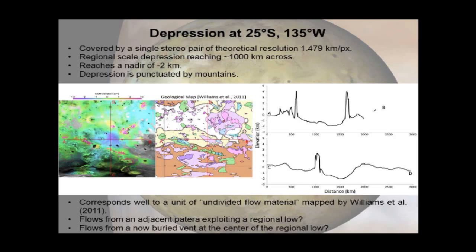Moving on to highlights of the global DEM: one of the most striking features is a deep depression in the southern hemisphere reaching about two kilometres below surrounding terrain and spanning about 1,000 kilometres across. It falls within a single stereo pair of good resolution at 1.5 kilometres per pixel. On Dave Williams's geological map it corresponds to a unit of undivided flow material. It's possible these flows took advantage of this topographic low, perhaps originating from an adjacent caldera or from a vent at the bottom of the depression now buried by flows.